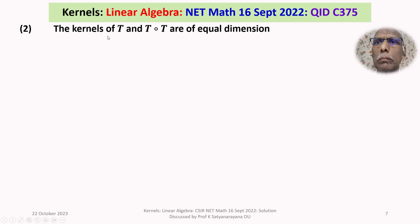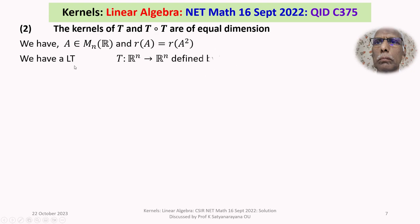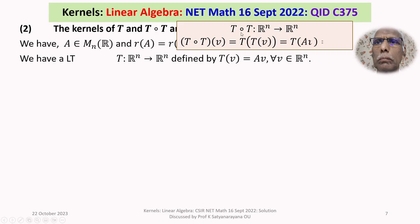We now prove option 2: the kernels of T and T-composed-T are of equal dimension. The transformation T∘T is also a linear map from R^n to R^n. Its action is given by (T∘T)(V) = T(T(V)) = T(AV) = A(AV) = A²V. So T∘T corresponds to multiplication by A².